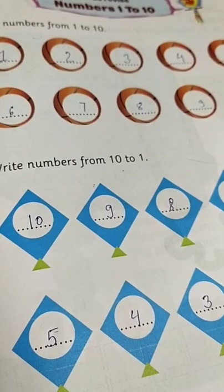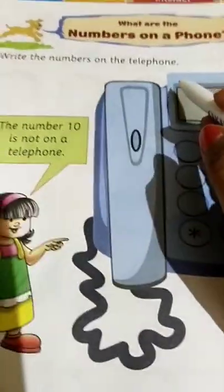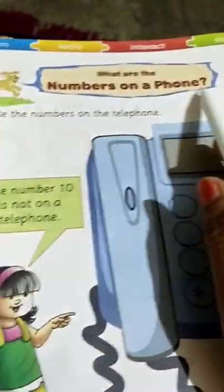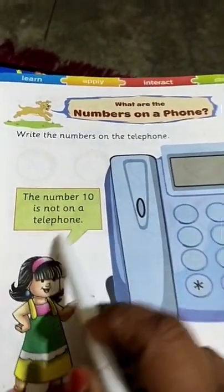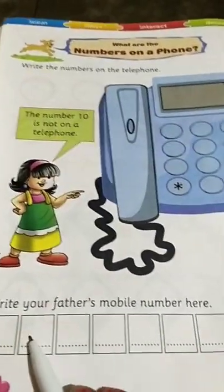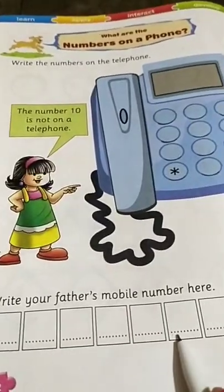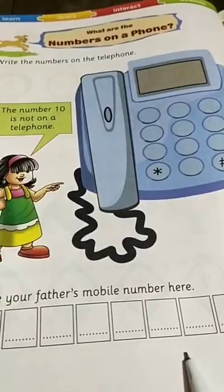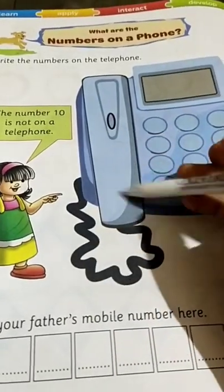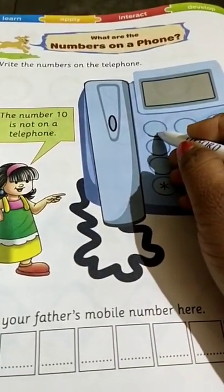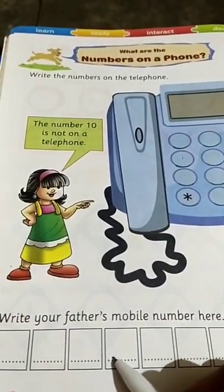You have to learn it at your home. Now open next page, page number 52. Here, write the number on a telephone. Write the number on the telephone. So here, write your father's mobile number. You have to write your father's mobile number in this blank — in this fill in the blank. And also you have to write the number, means you have to write the number of your father here and in this blank also.